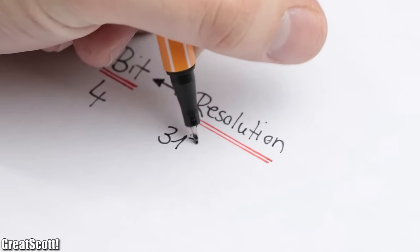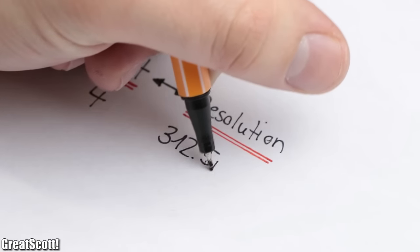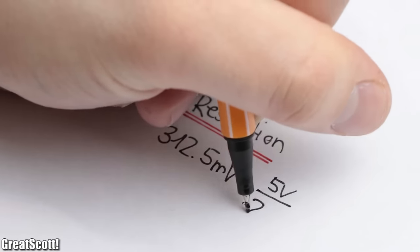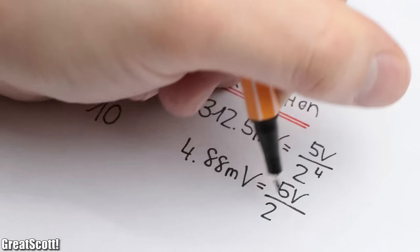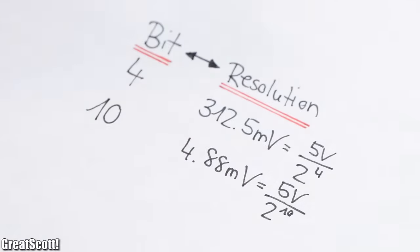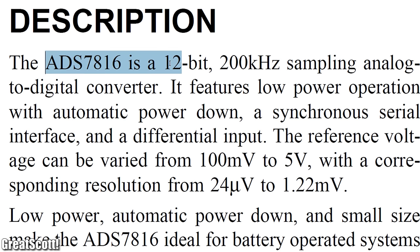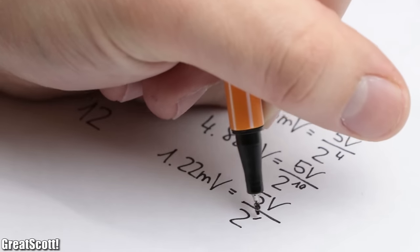With 4 bits, we get voltage steps of 312.5 millivolts with a reference voltage of 5 volts. With the 10 bits of the Arduino, we get steps of 4.88 millivolts. And with the 12 bits of the ADS7816, we even get steps of 1.22 millivolts.